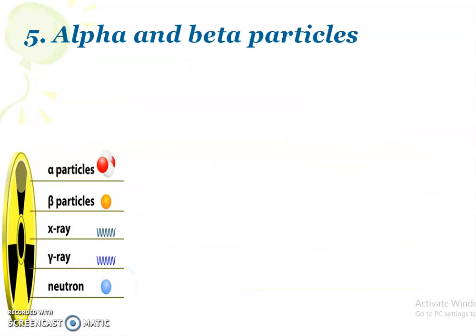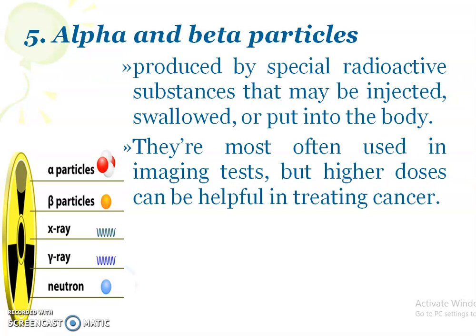The last type of particle radiation is alpha and beta particles. These are produced by some radioactive substances that can be injected, swallowed, or put into the body. Alpha and beta particles are commonly used for imaging purposes, such as in barium enema and barium meal procedures. However, higher doses of these alpha and beta particles can also be helpful in treating cancer.